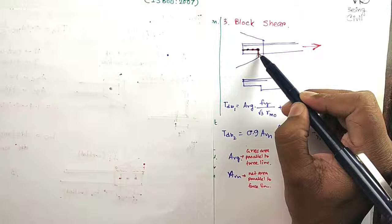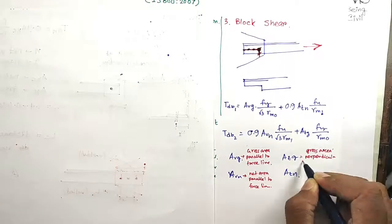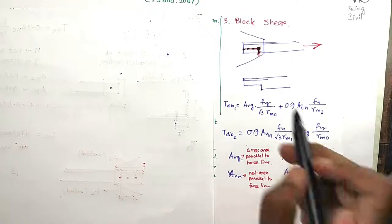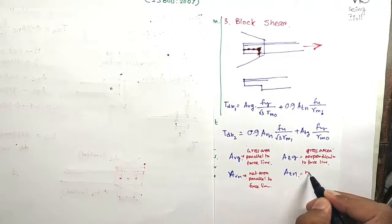Now what about Atg? It is perpendicular to this line. This portion is gross area perpendicular to force line. And if you subtract for the bolt, you will get the net area.